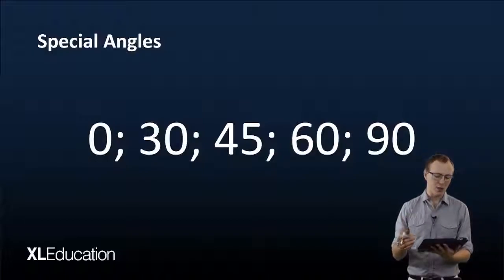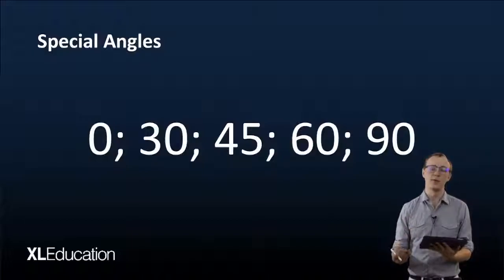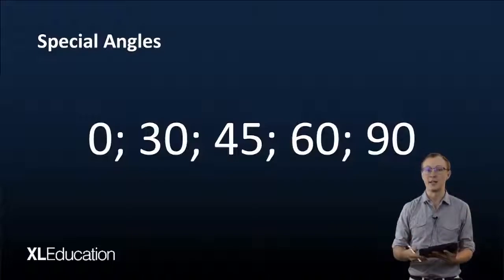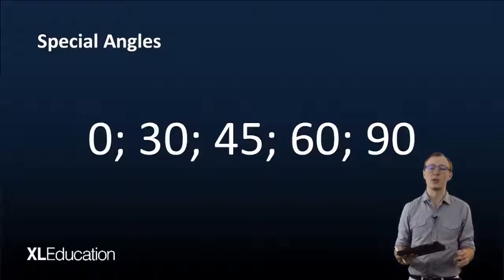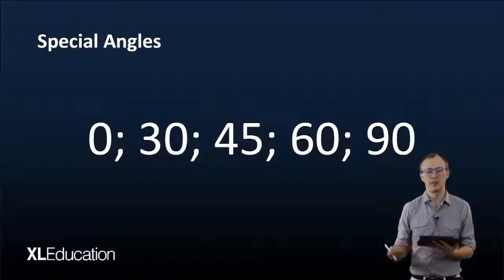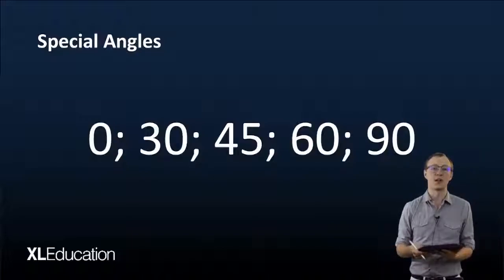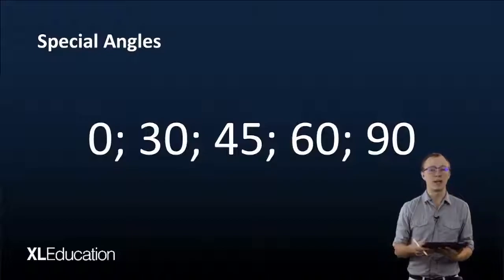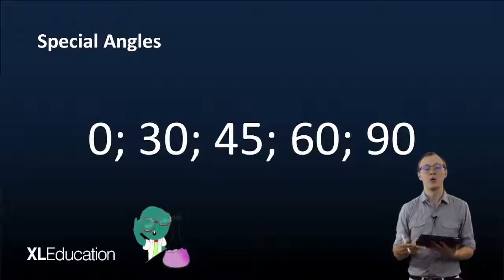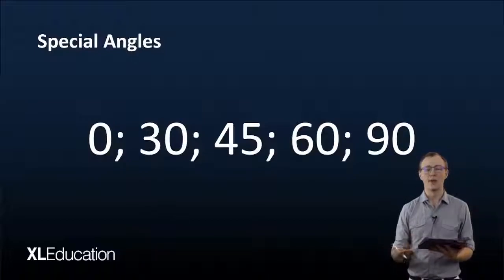Our special angles are 0, 30, 45, 60, and 90. You'll notice these are only angles in the first quadrant, so if you don't have an angle in the first quadrant, just change it into an angle in the first quadrant using reduction formulae or the co-functions.